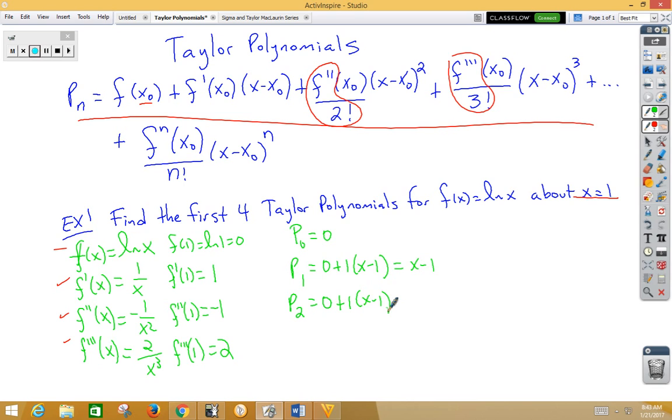We need our quadratic term. Notice that's a negative 1, x minus 1 squared over 2 factorial. That could be written as x minus 1 minus 1 half x minus 1 squared, realizing that 2 factorial is simply 2.